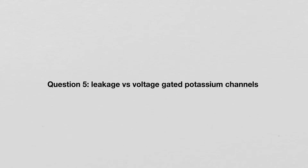Question five looks at the difference between leakage and voltage-gated potassium channels. Leakage channels are found all over the cell and are responsible for resting membrane potential — they are always allowing at least some potassium to leak out. Voltage-gated potassium channels open based on voltage in response to reaching threshold, but potassium channels are slower than sodium channels, so they open later.